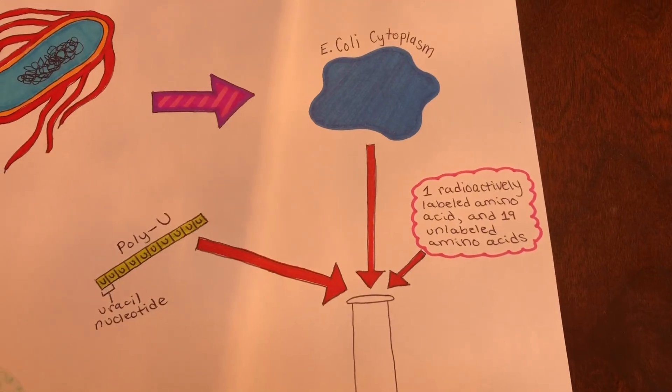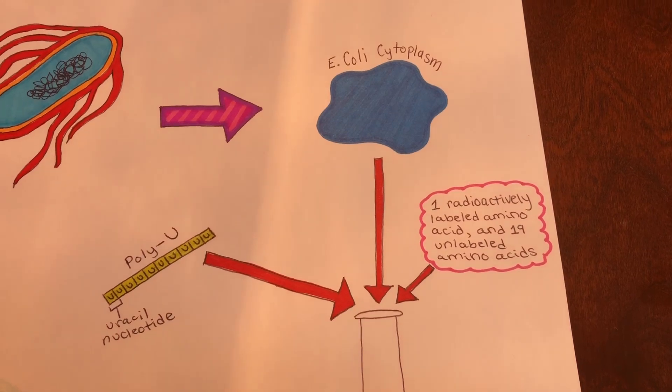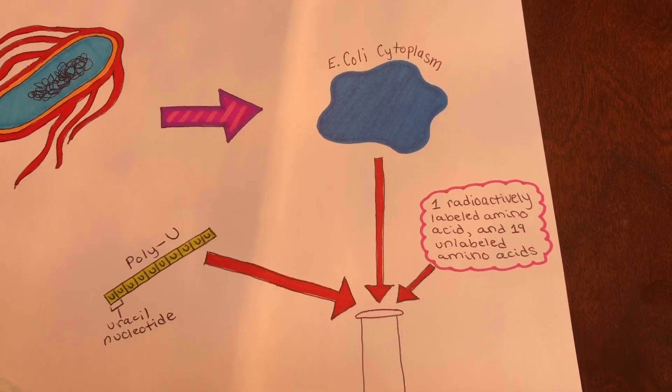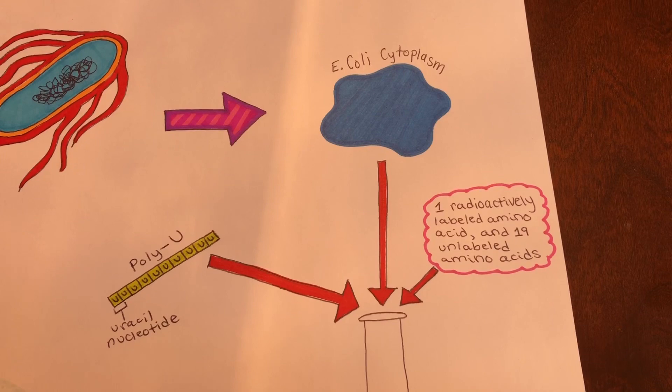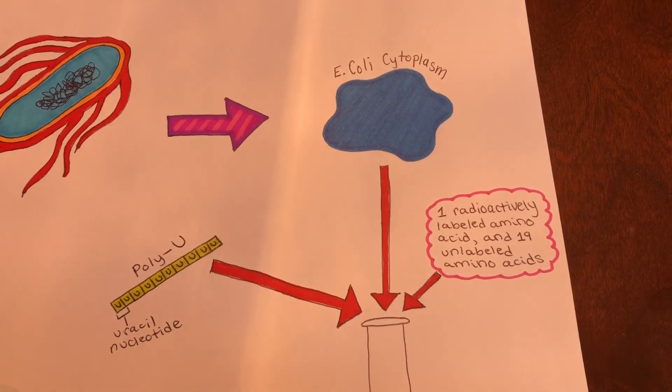They placed E. coli extract in 20 test tubes, each test tube containing all 20 amino acids. A different amino acid was radioactively tagged in each test tube. Matai then added synthetic RNA, known as poly-U, made purely of uracil, to each test tube.